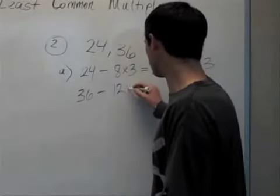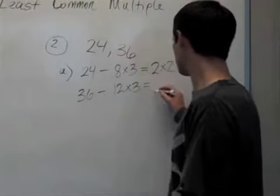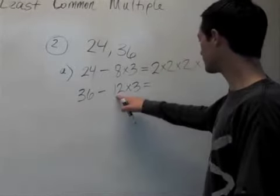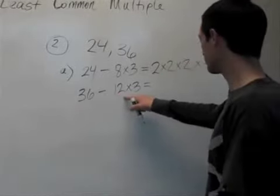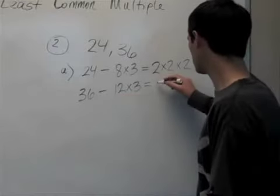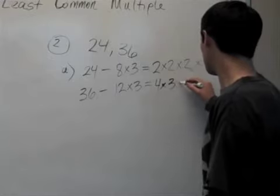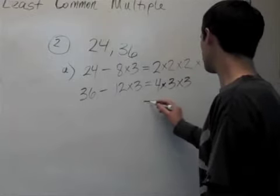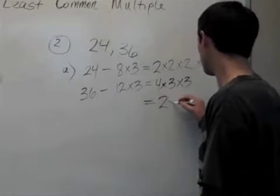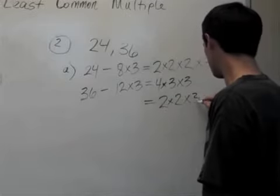36 is 12 times 3, which 12 is not a prime number, so we need to write this in prime factorization form. It's 4 times 3 times 3 times 3, which is 2 times 2 times 3 times 3.